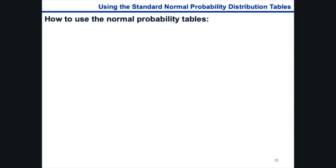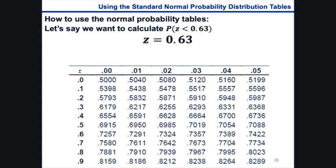Let's take a look at how to use the normal probability tables. Let's say we want to calculate the probability that z is less than 0.63. So our z value of interest is 0.63 and we want the area under the curve to the left of 0.63.